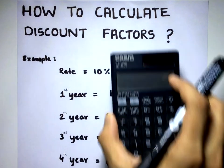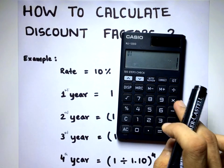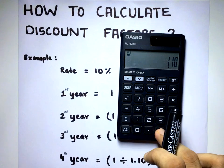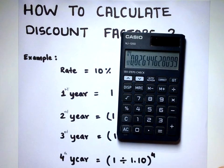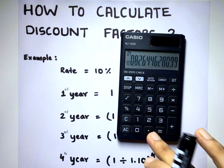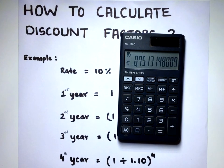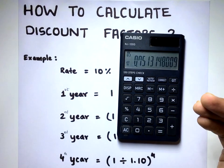But now, how will you do this in a normal calculator? It's really simple. 1 divided by 1.10 equals the discount factor of the first year, equals the discount factor of the second year, equals the discount factor of the third year. You keep on doing this.